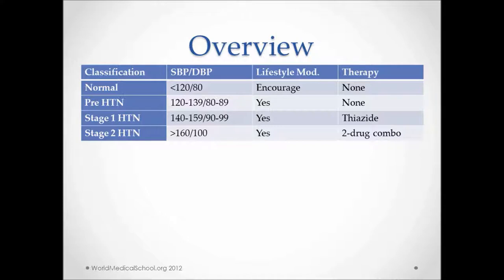The Joint National Committee on Prevention, Detection, Evaluation, and Treatment of High Blood Pressure classified hypertension as follows. With the help of this table, we can classify the patient's blood pressure into different categories and give them appropriate treatment. Normal blood pressure is defined as systolic less than 120 over a diastolic of 80. Prehypertension is systolic of 120 to 139 over diastolic of 80 to 89. Stage 1 hypertension is systolic of 140 to 159 over diastolic of 90 to 99. Stage 2 is systolic greater than 160 over diastolic of 100.